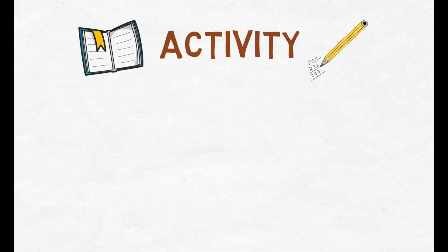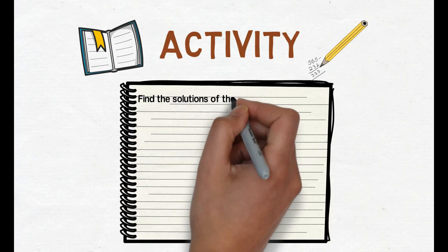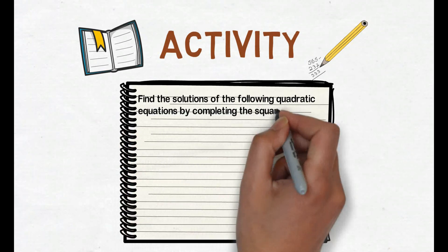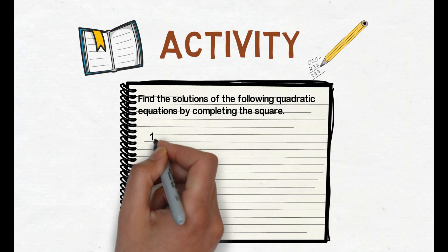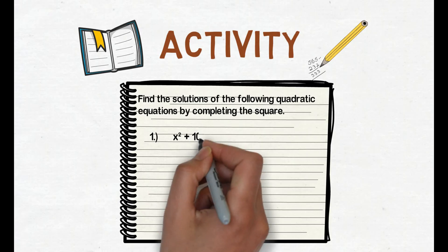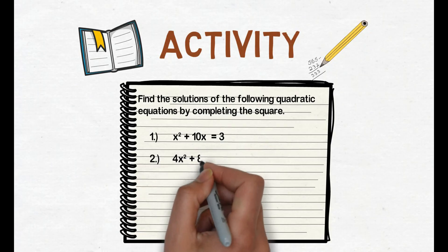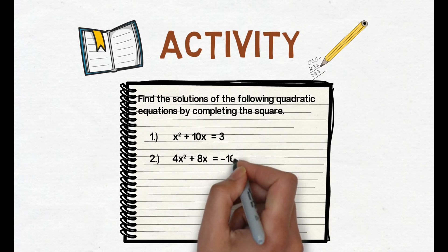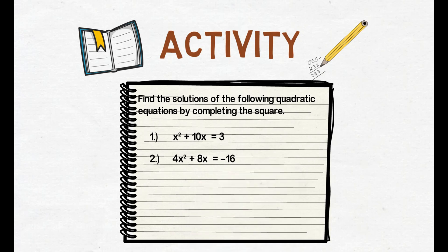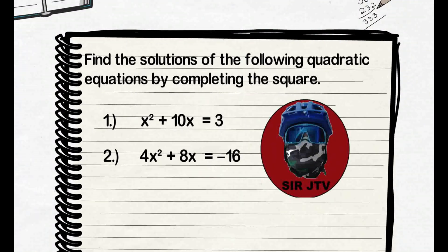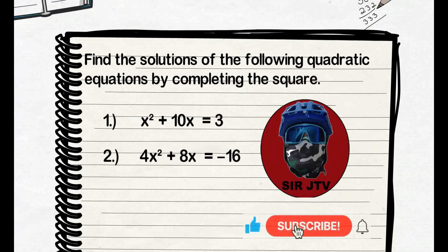For your activity, find the solutions of the following quadratic equations by completing the square. Number 1: x squared plus 10x equals 3. Number 2: 4x squared plus 8x equals negative 16. Pwede niyong i-comment sa comment box ang inyong mga sagot. That's all for now. Sana marami kayong natutunan sa video lesson na ito. Huwag kalimutan mag-subscribe para updated kayo lagi sa mga i-upload kong mga video lessons.